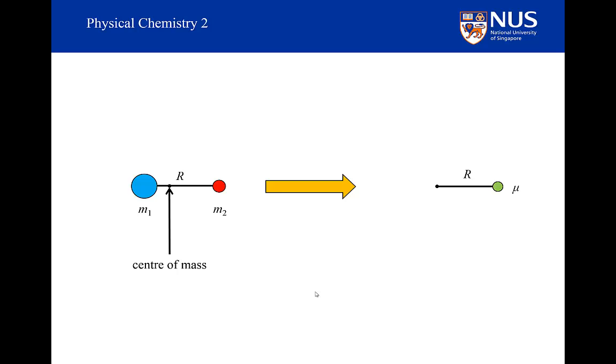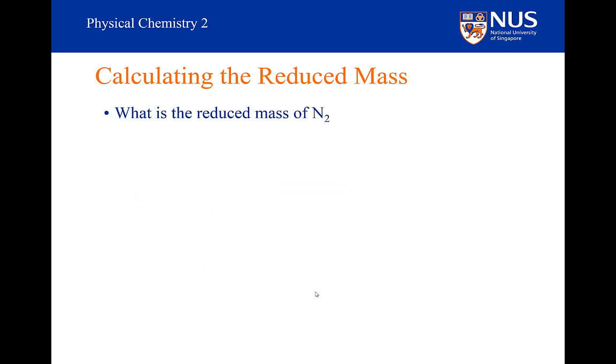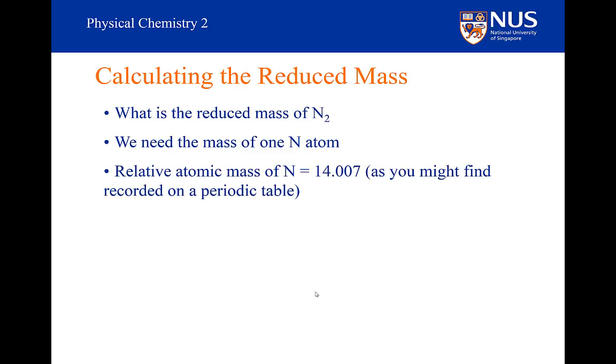We're going to calculate the reduced mass for diatomics quite a lot. But there is an issue here with regard to isotopes. Which masses should we employ? For instance, what is the reduced mass of dinitrogen or N2? How would I calculate it? Where would you go to look up the reduced mass of N2? All we really need is the mass of the nitrogen atom. If I go to the periodic table, it will tell me that the relative atomic mass for atomic nitrogen is 14.007 atomic units. Could I use that?